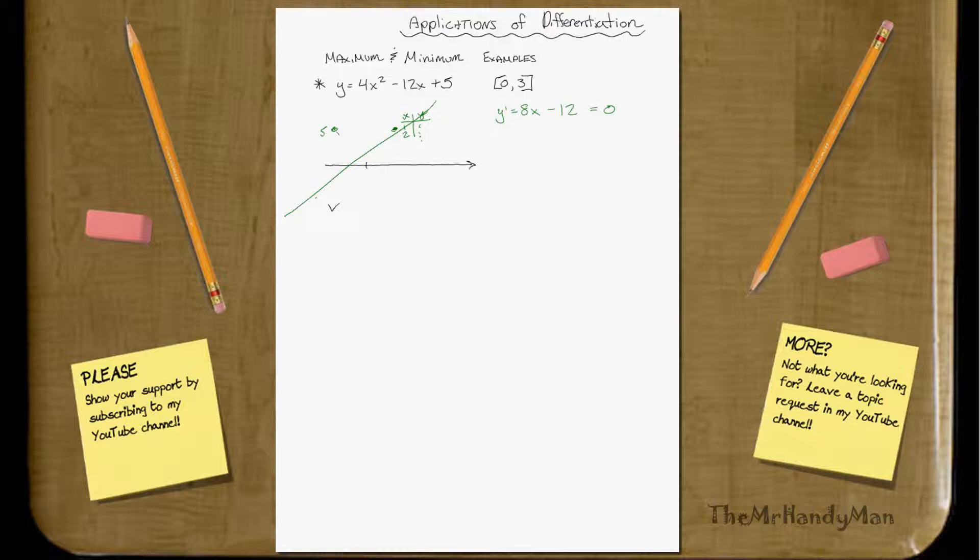Okay, so you add the 12 over, you add the 12 over, and then you divide it by 8, so y prime equals, or I mean, sorry, x prime, x equals 1.5, that'll be your solution. Y prime equals 0, remember, always remember that.